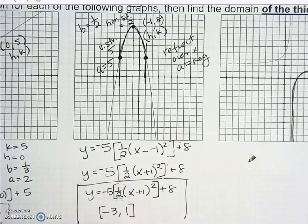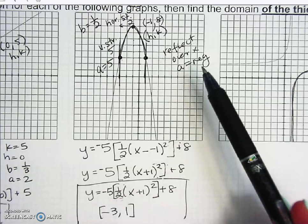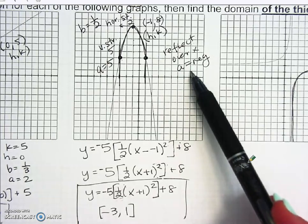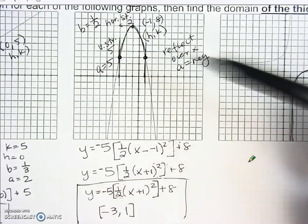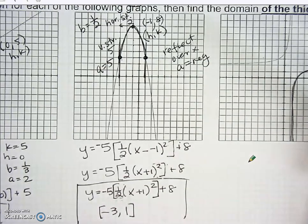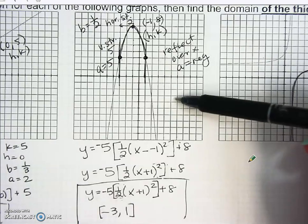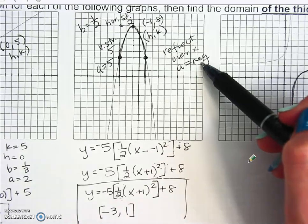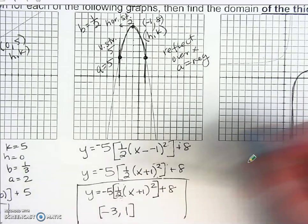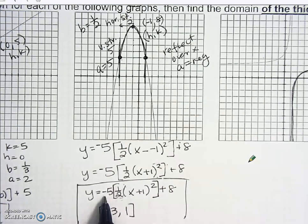I had to pause the video because I got a wrong outcome — I forgot to mention the reflection. When you see the graph pointing downward from its original form, it's been reflected over the x-axis, which means A is negative. So A becomes negative five. I've added the negative in front of the A value now.